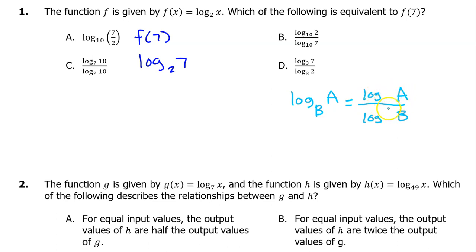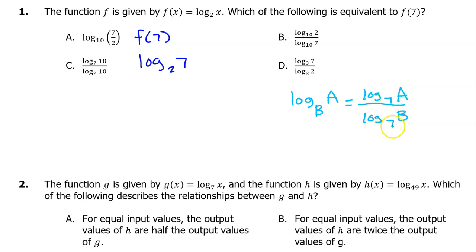You can use whatever base you want. This is called the change of base formula because you can put any number here — log base c of a over log base c of b. So I could put log base 7 of a divided by log base 7 of b, or log base e of a and log base e of b. You can just pick whichever base you want.